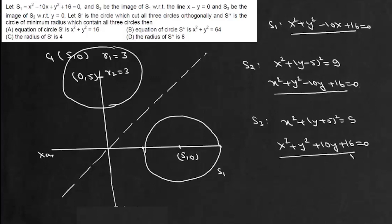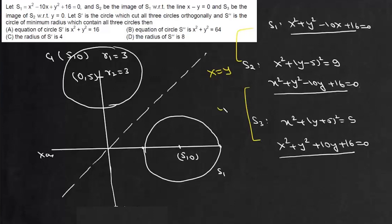We have to find the circle S' which cuts all three circles orthogonally. The center of S' will lie at the radical center of the three given circles. For S1 and S2, the radical axis is the line y = x. For S2 and S3, subtracting gives y = 0. Putting y = 0 gives x = 0, so the radical center of the three circles is at (0, 0).